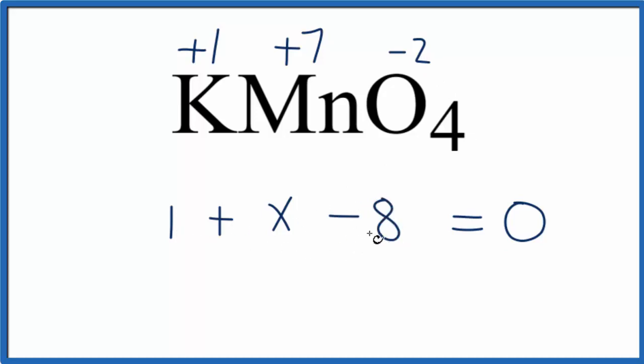So 1 and minus 8, that's minus 7. So we'll need to add a positive 7 to both sides. And if we do that, we end up with plus 7 as x. And that's the oxidation number on the Mn here in the KMnO4.